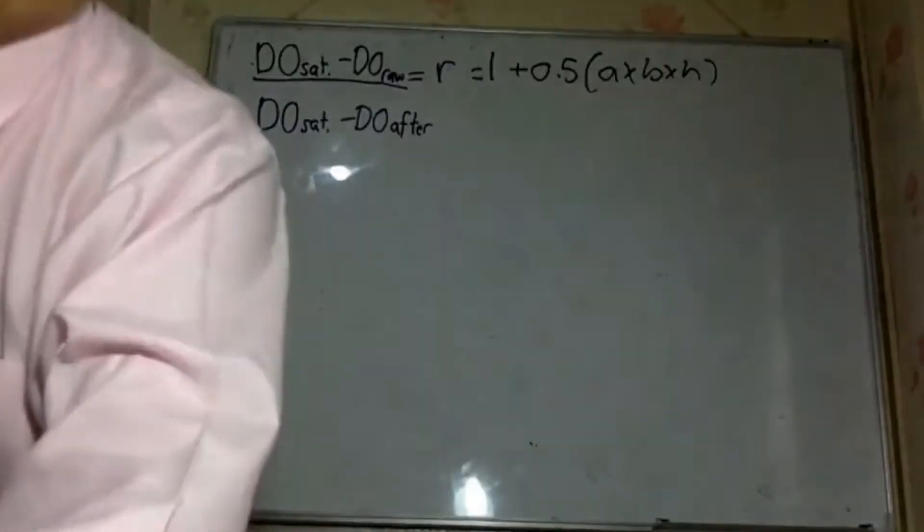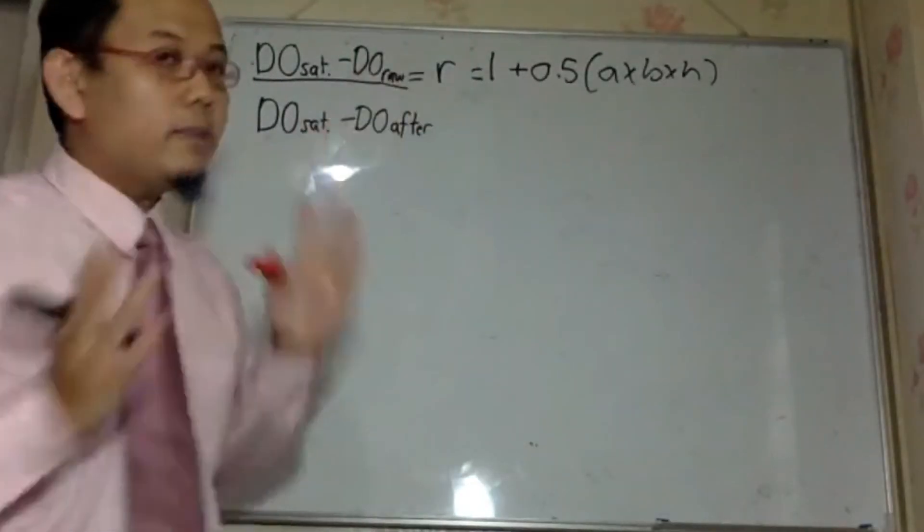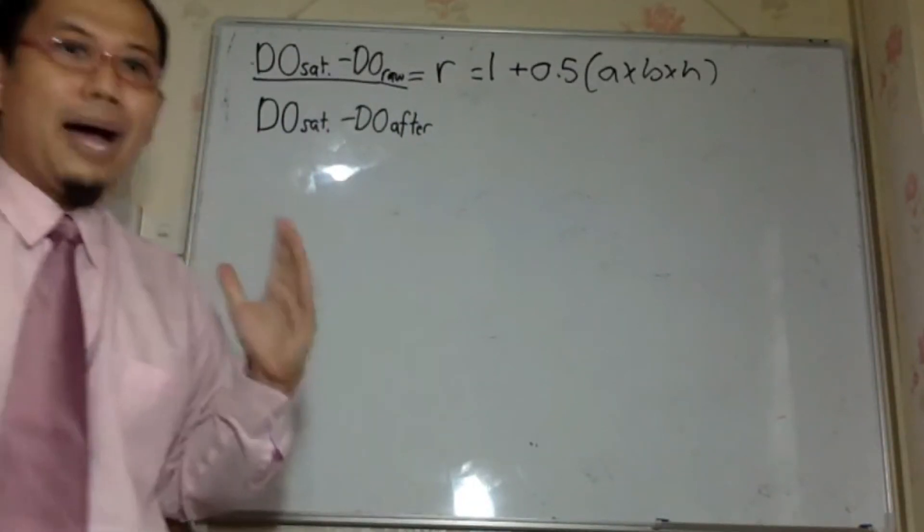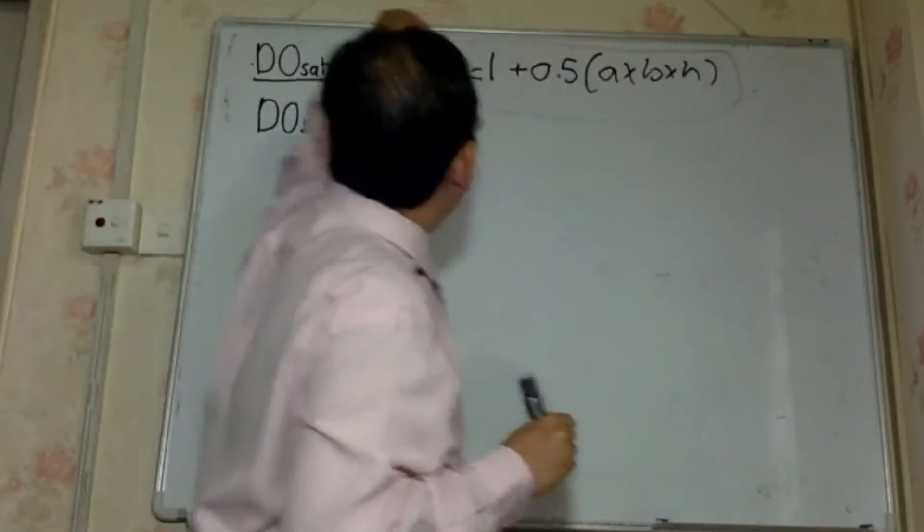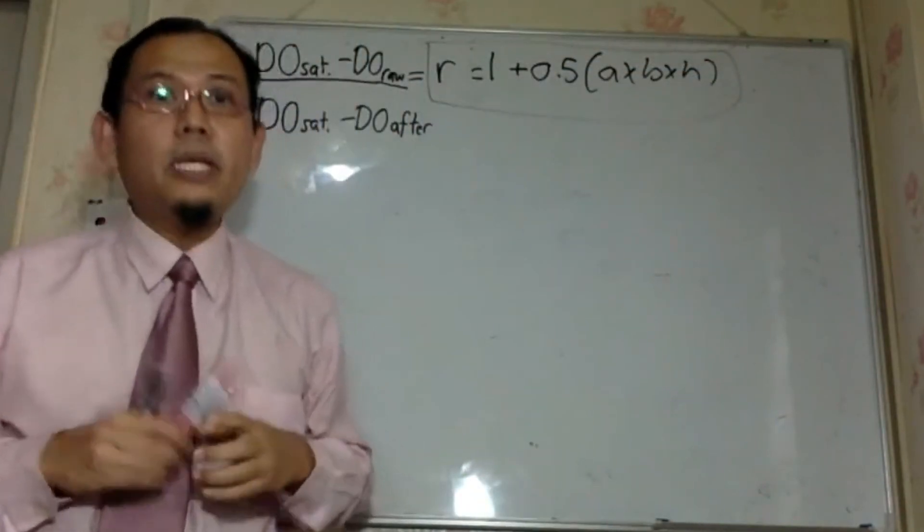The ratio between the deficit of oxygen before and after is basically R. So basically what I am trying to say, the formula contains two parts. The first part here, something that you do not have to memorize, because it always been given.